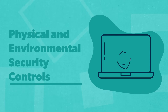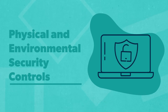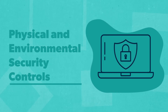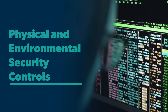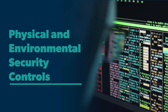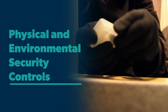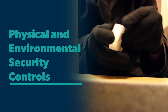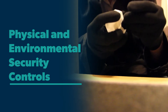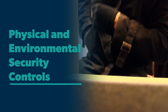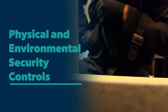Physical and environmental security controls keep a company's data safe from cyberattacks. When we think of hackers, we often think of a person behind a computer, but that's not always the case. So it's important to define and consistently test physical security controls, like key badge entry to sensitive areas and intrusion detection systems.